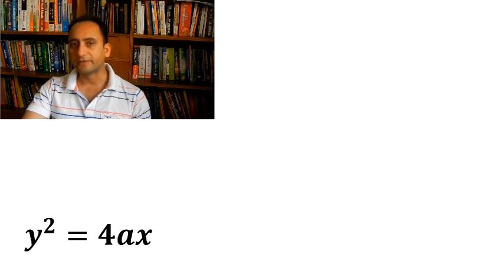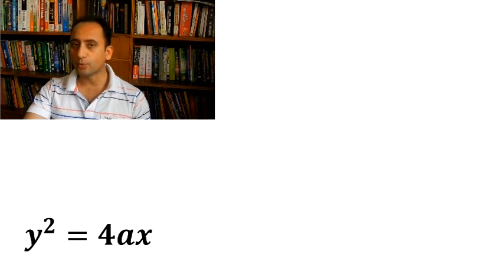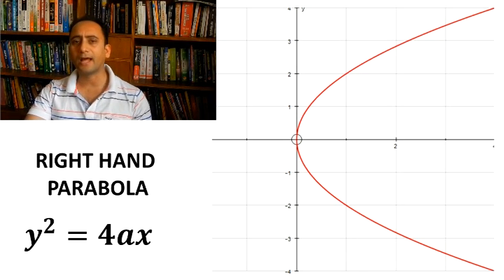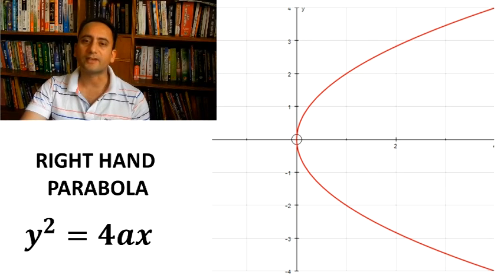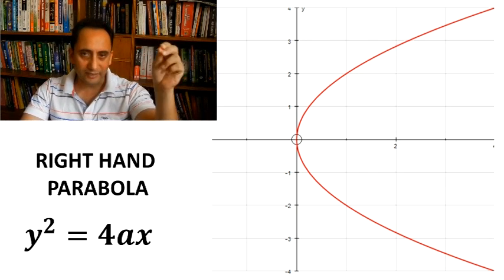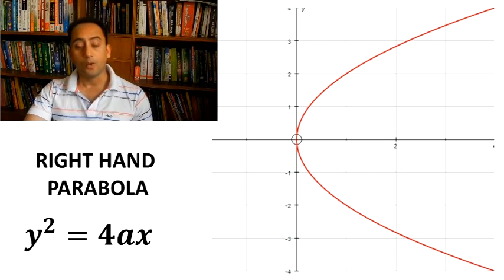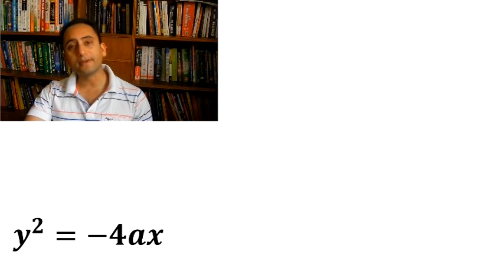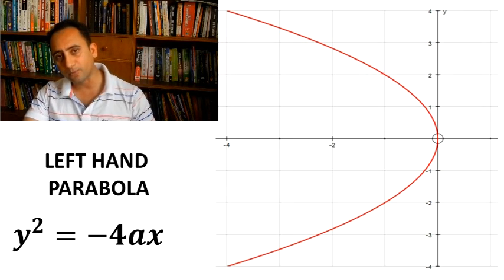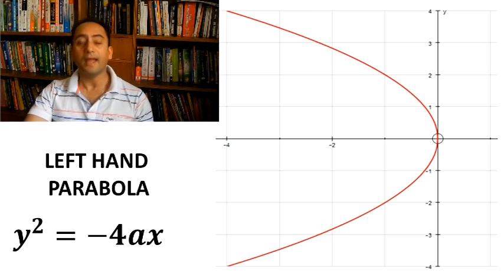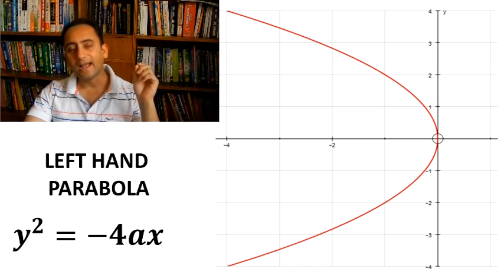Next one is y² = 4ax. This represents a right-hand parabola which is symmetric with respect to the x-axis and centered at the origin. And y² = -4ax represents a left-hand parabola, again symmetric with respect to the x-axis with vertex at the origin.